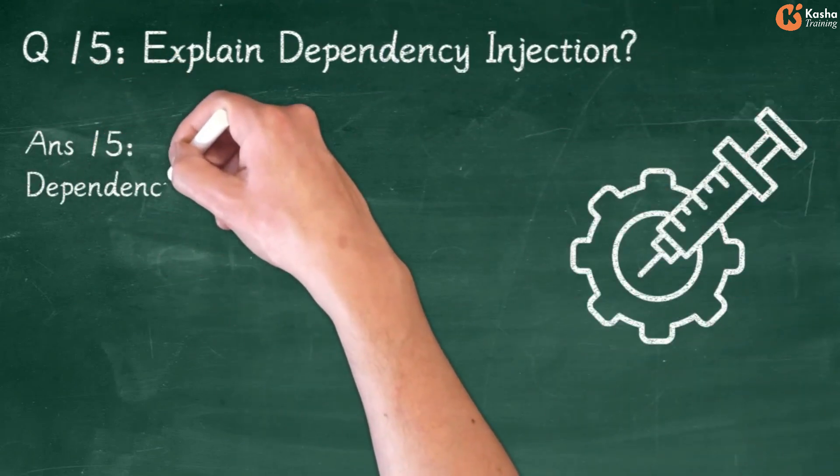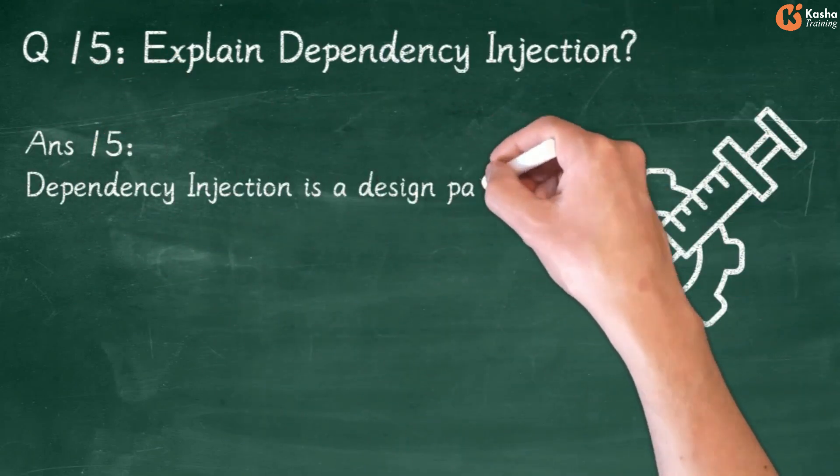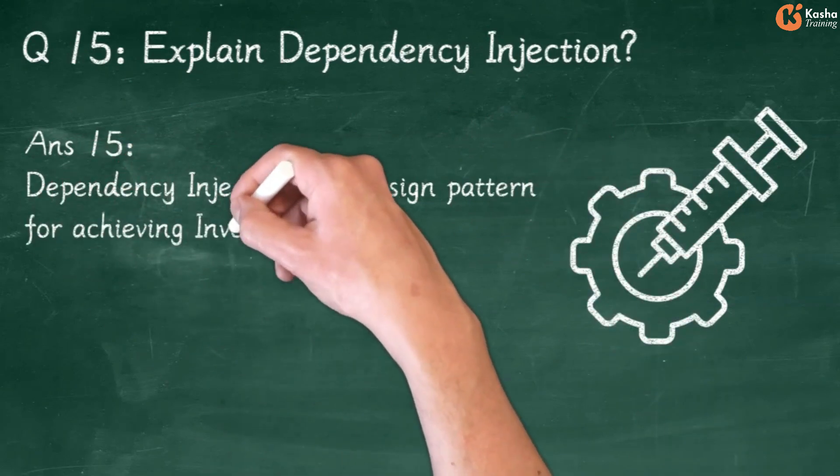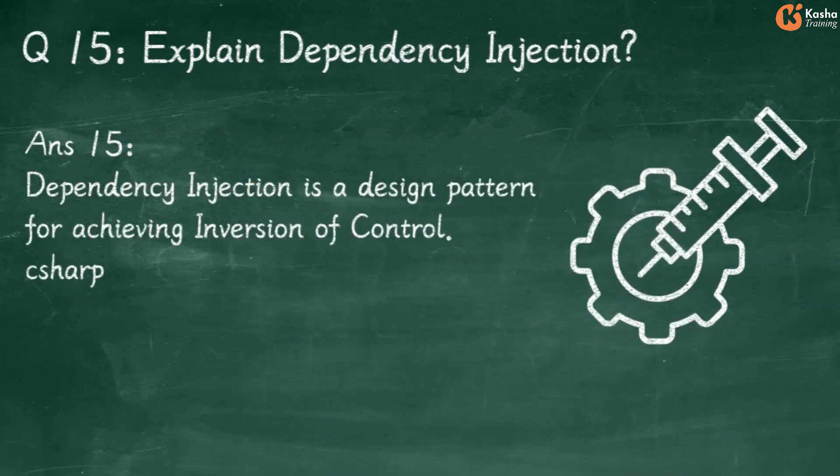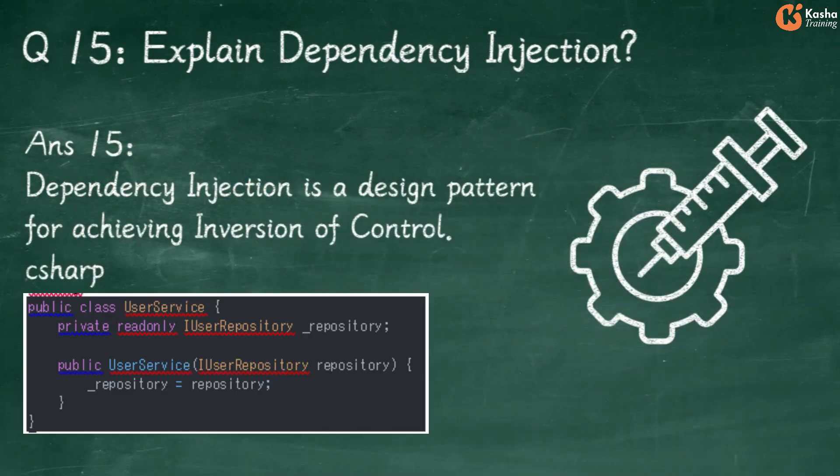Answer 15: Dependency Injection is a design pattern for achieving inversion of control. In C#: Public Class UserService has Private ReadOnly UserRepository _Repository. Public UserService with UserRepository Repository where _Repository = Repository.